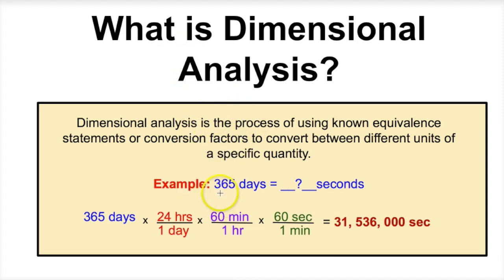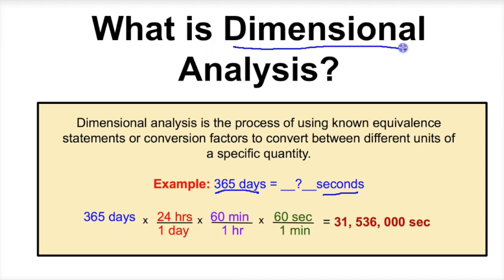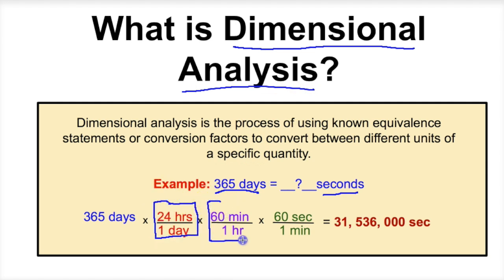Let's suppose for example we have 365 days and we want to know how many seconds this is. So we want to know how many seconds are there in 365 days. In order to do this we will have to use dimensional analysis, and we're going to have to come up with a series of what are called equivalent statements to help solve this problem.